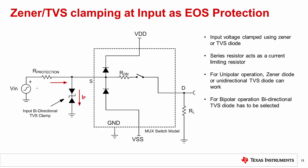A solution for the case where the overvoltage fault occurs on an off channel is to use a Zener or TVS diode to clamp the input channel within the absolute maximum input range. A unidirectional TVS diode is normally used for a single supply configuration, and a bidirectional TVS diode is used for a bipolar supply. The clamping voltage is selected so that the input does not exceed VDD or VSS supply to the device. A series resistor acts as a current limiting resistor. Take care to understand the parasitic capacitance and leakage currents of the input clamp to ensure system performance is not impacted.